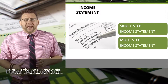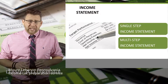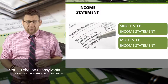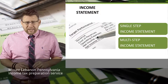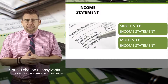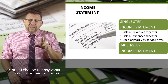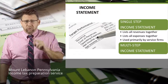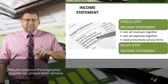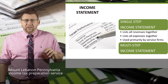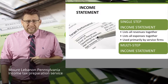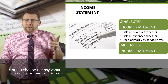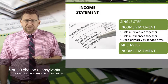There are two primary formats for the income statement: the single-step income statement, which you are already familiar with, and the multi-step income statement, which we will learn about in this podcast. The single-step income statement lists all revenues together and totals them for total revenue. Then all expenses are listed together and totaled for total expenses. The difference is then net income. This format is primarily used by service firms.